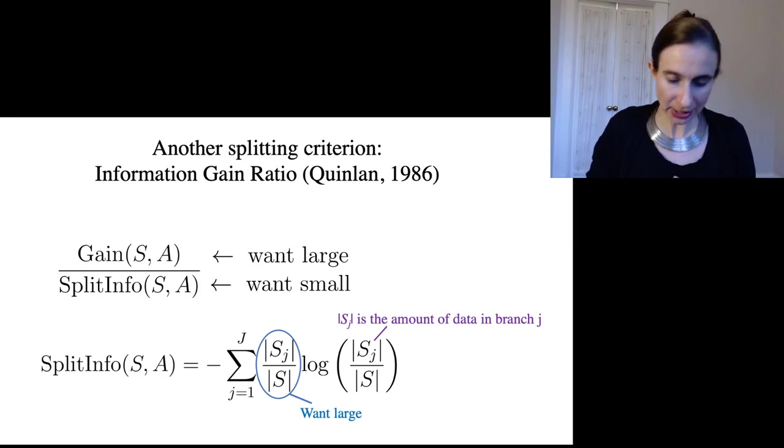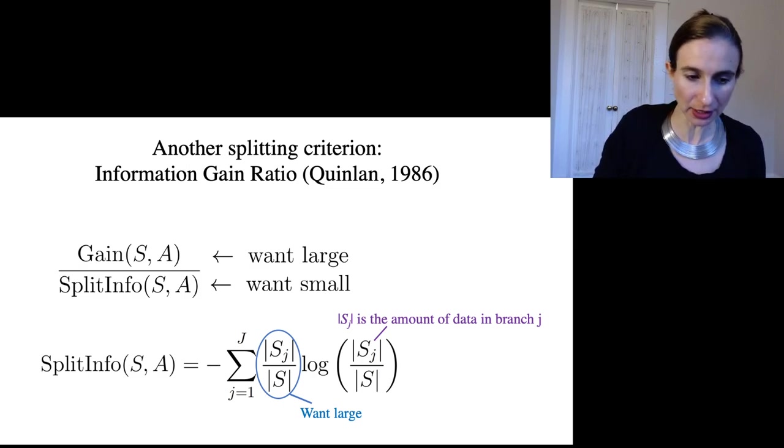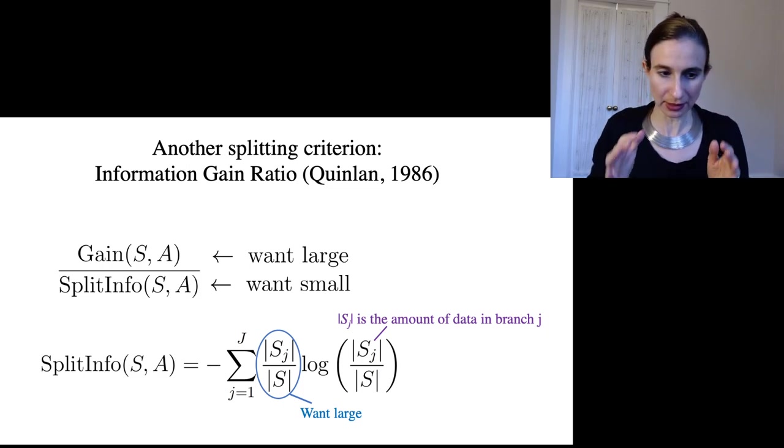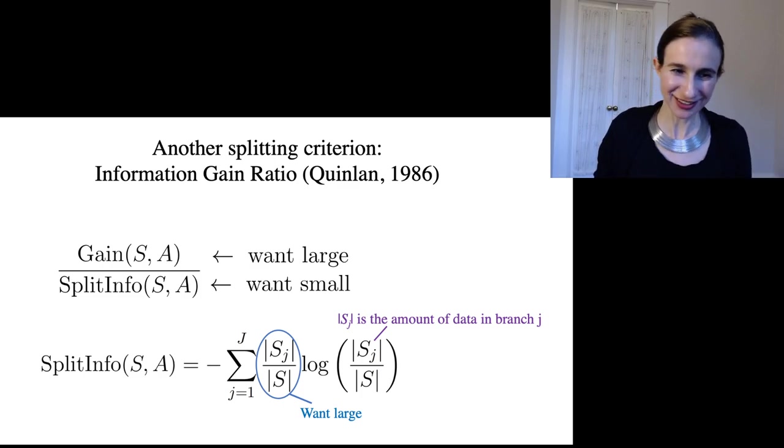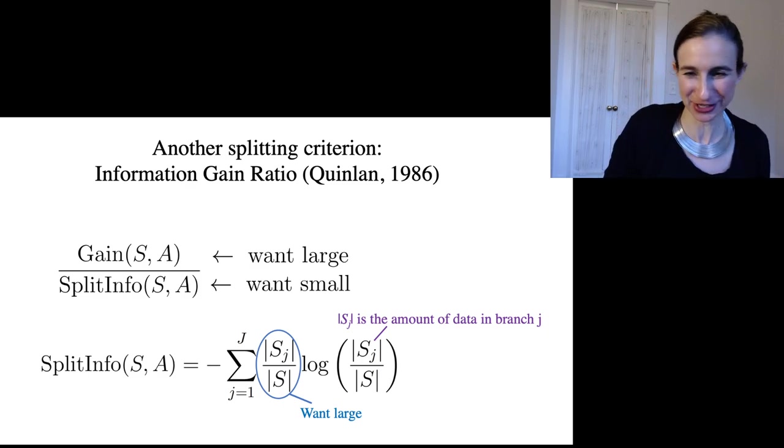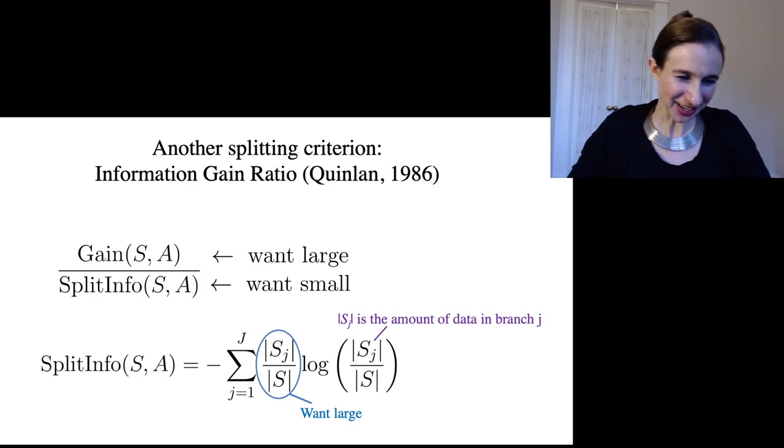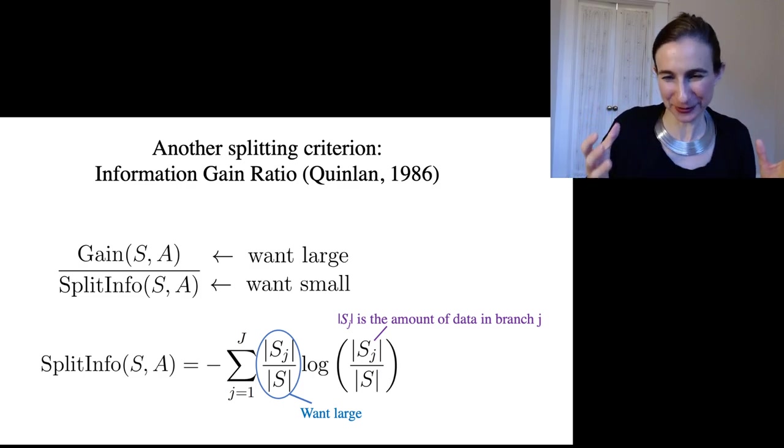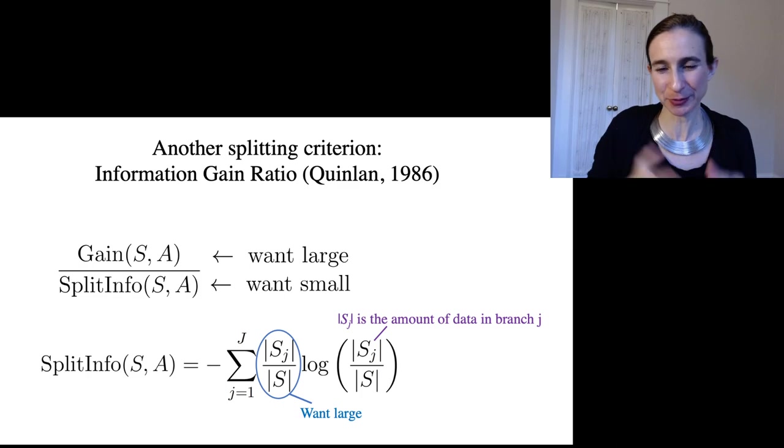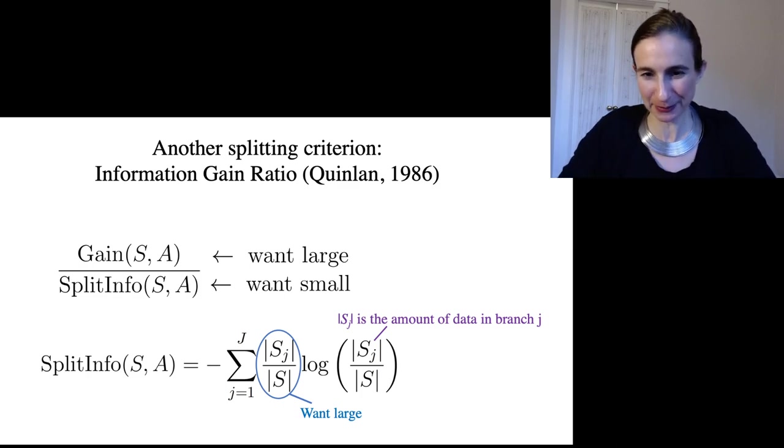As you can see, if these ratios are large, then all the terms in the sum are going to be large, and then the negation makes it all small. That will help us make sure that the denominator of that fraction is small. So that's how it works. It just tries to mitigate the information with trying to make sure each branch is fairly populated.